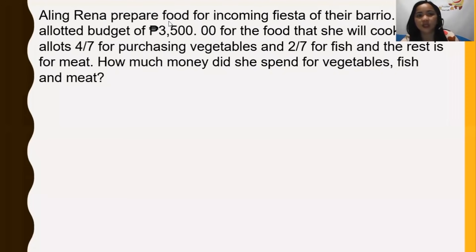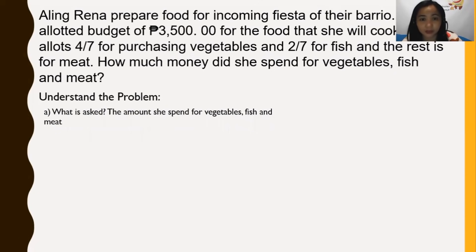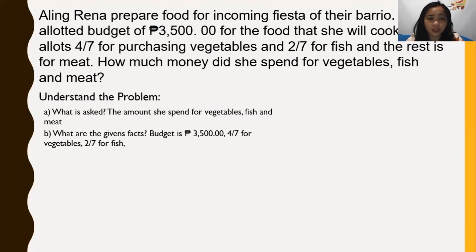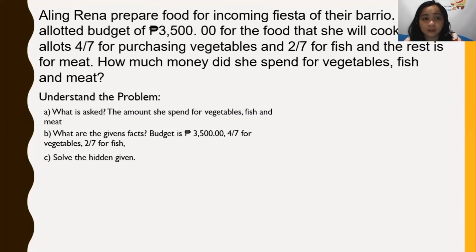To understand this problem, let us analyze it using the 4-step solution. The first step is to understand. We need to find what is asked in the problem. What is asked is the amount she spent for vegetables, fish, and meat. Next are the given facts: the budget is P3,500, 4/7 of the budget for vegetables, and 2/7 of the budget for fish.